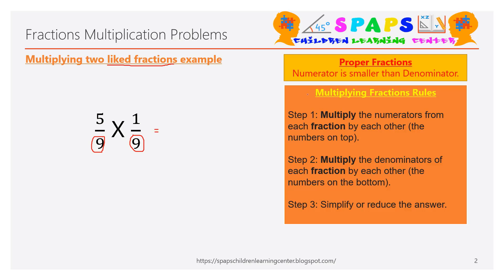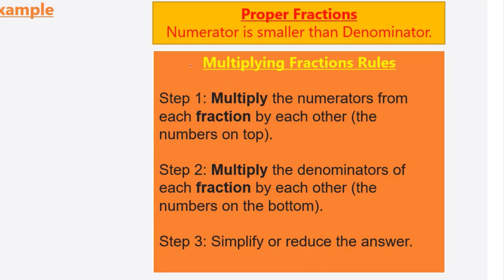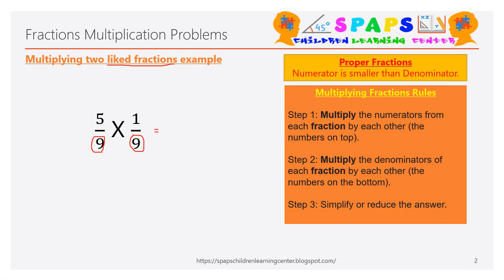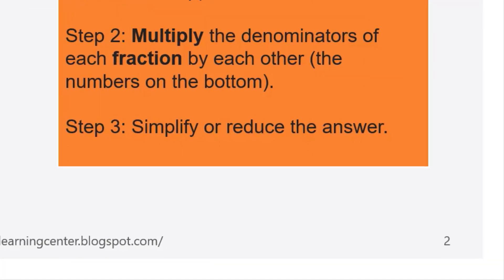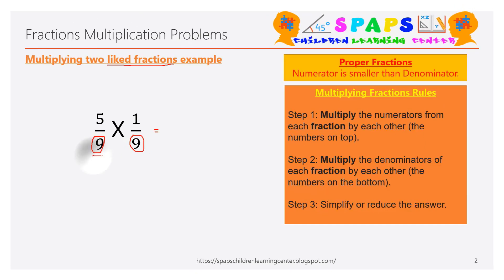Before we start solving the problem, the first step is: multiply the numerators from each fraction by each other. That means multiply five by one — the top numbers. Secondly, multiply the denominators of each fraction by each other. So five multiply by one, divided by nine multiply by nine.